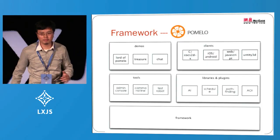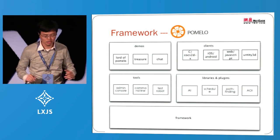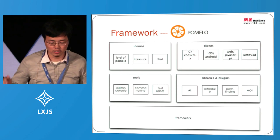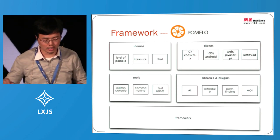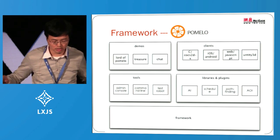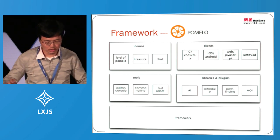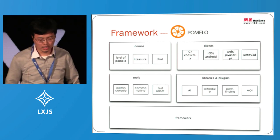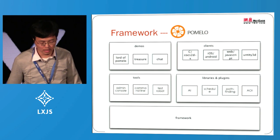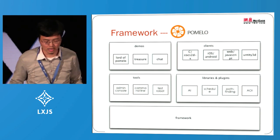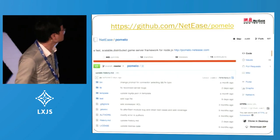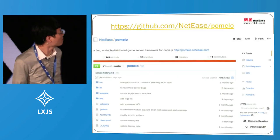Pomelo is not a single project. If you take a look at our GitHub account, there are about 40 repositories. We have a bunch of demos — actually a big demo with more code than our framework. We support a lot of clients including C, iOS, JavaScript, Unity 3D, etc. We have tools including an admin console, command line tools, and performance test tools. And also some libraries including AI, scheduling, pathfinding, and so on. Beneath it all is the framework itself.